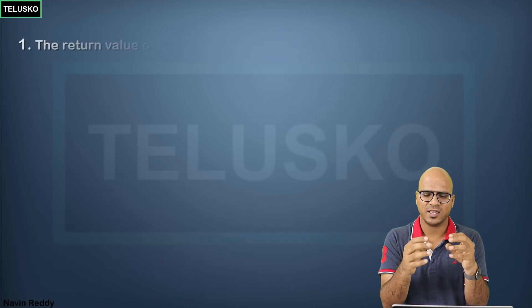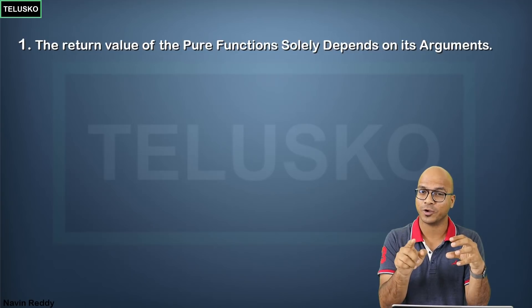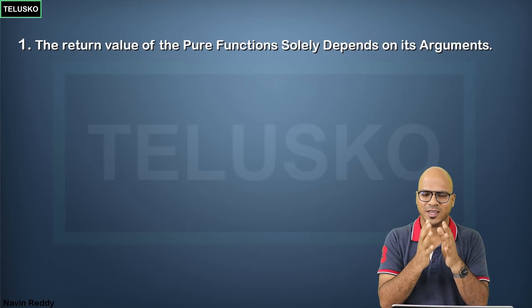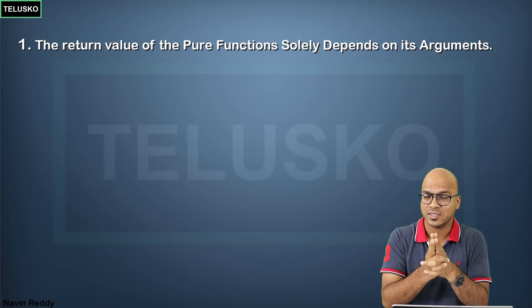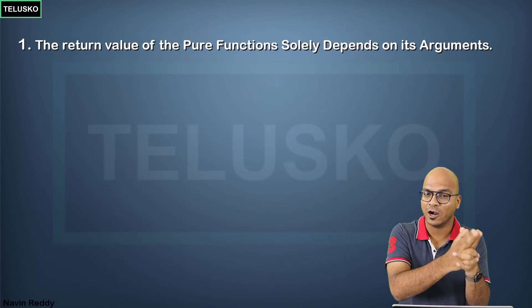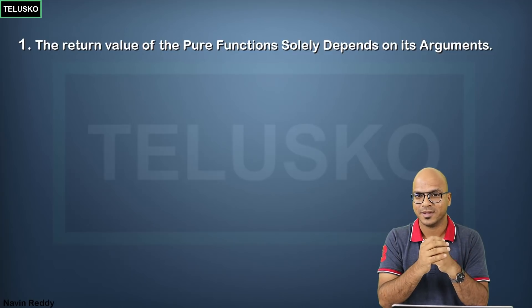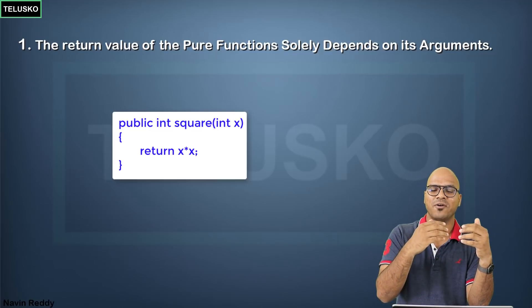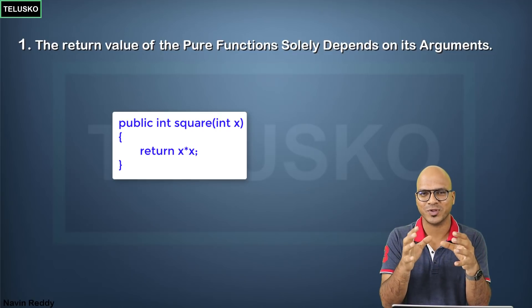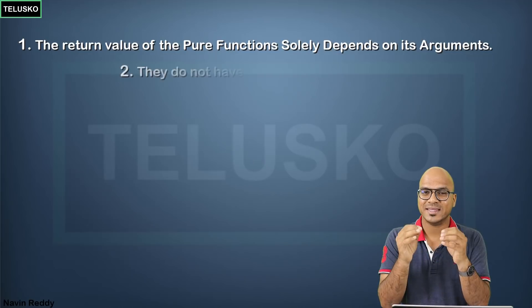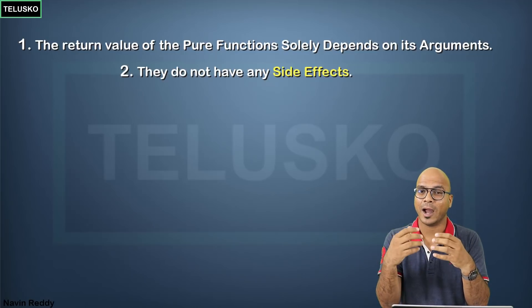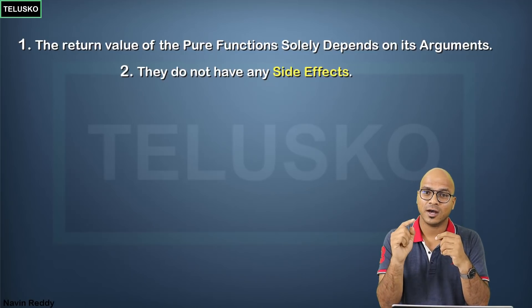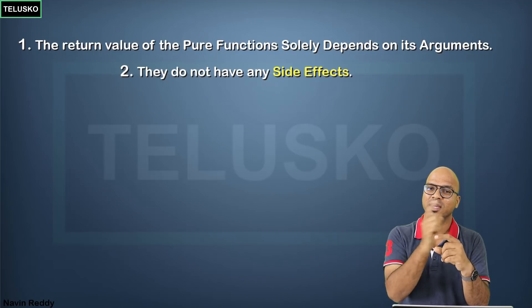So what are pure functions? A pure function accepts arguments and works on those arguments to produce output. The key property is: if you pass the same input, you always get the same output, no matter how many times you call it. For example, finding the square of 5 always returns 25 — that's a pure function. The second property is it must not have any side effects. If you have a class variable like 'count' and the method changes it, that's a side effect.